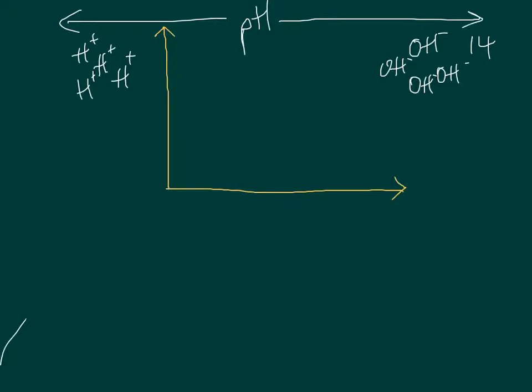So here we have our axes again, we're looking at the rate of reaction on the y-axis, and we are looking at varying pH on the x-axis.